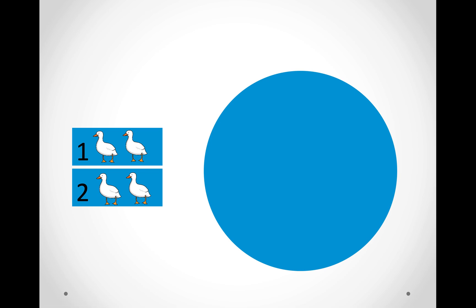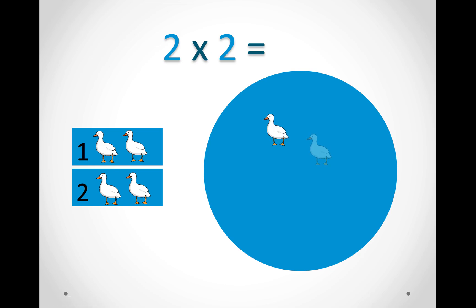In this picture we have two groups — one and two — and in each group we have two ducks. So we will say two times two equals four ducks altogether.